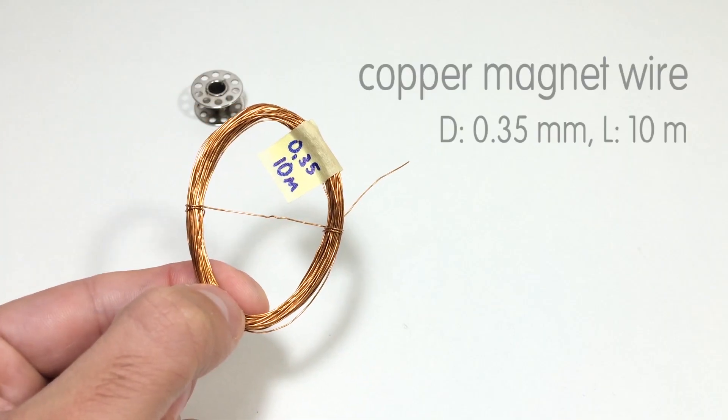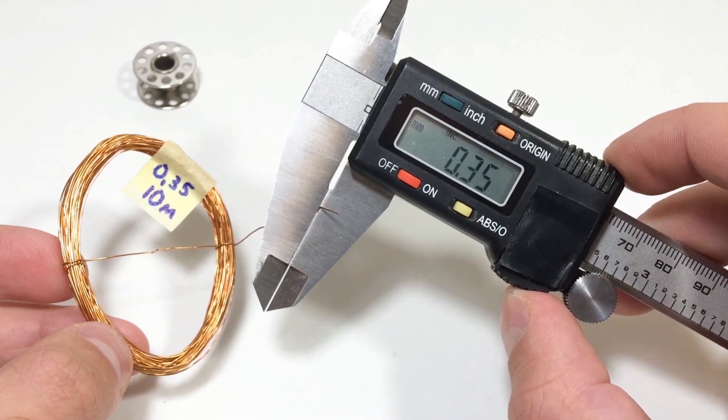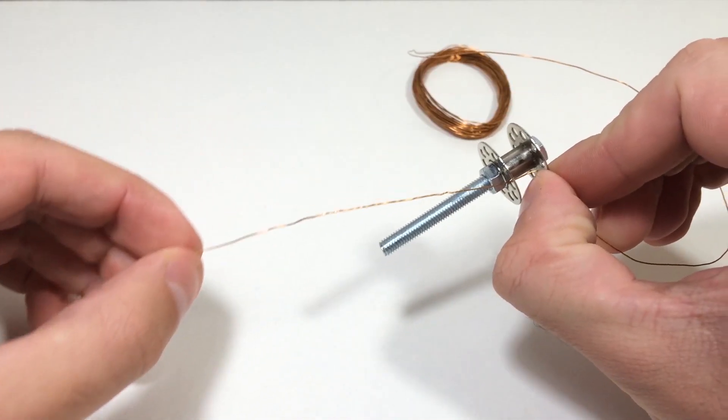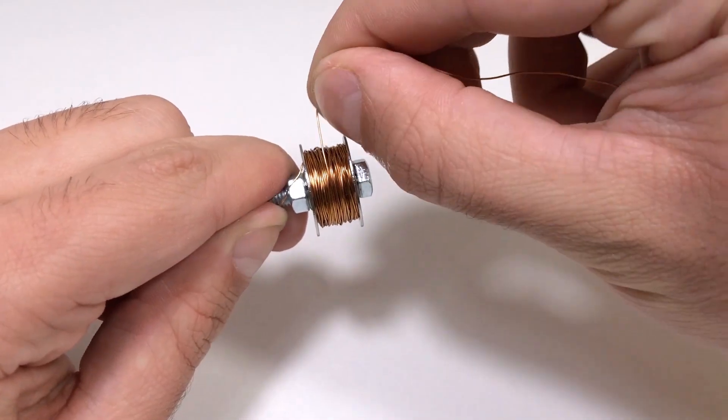We'll start with the electromagnet. Take thin insulated copper wire and wind it tightly around an empty thread spool. Go layer by layer, keeping the winding even. This coil will act as our electromagnet once current flows through it.